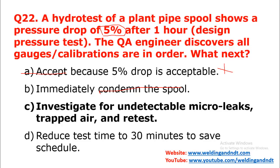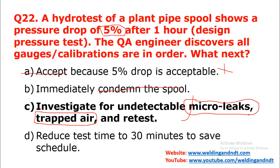To check, you will have to investigate. You will investigate undetectable micro leaks — the small leakages which have not yet been detected. Then you will check for trapped air: while filling water during hydro test, air may have been induced into the line, and that trapped air can also cause a pressure drop. First check micro leaks, then check trapped air, and if everything is okay, conduct a retest. This is the most appropriate and correct answer — Option C.